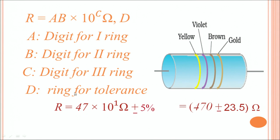Then the second color is violet. This has a digital value of 7 × 10^C, where C is the digital value of the third color. The third color is brown, which has a digital value of 1. So, what is the value? 47 × 10^1 ohms. That means 470 ohms.